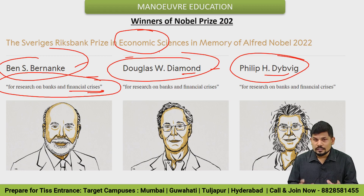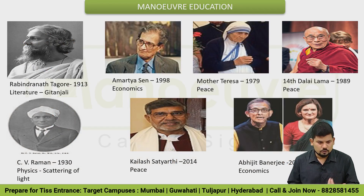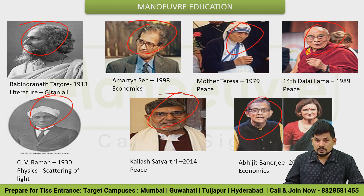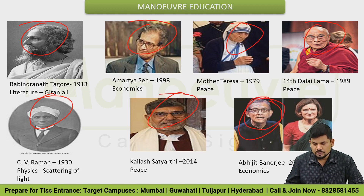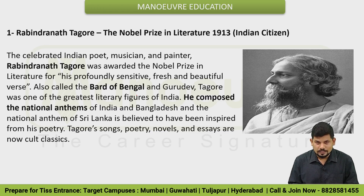Now see the well-known recipients from India in the past. The personalities are Rabindranath Tagore, Amartya Sen, Mother Teresa, Dalai Lama, Kailash Satyarthi, Subrahmanyan Chandrasekhar, and Abhijit Banerjee — the most recent last recipient. Abhijit Banerjee received it in 2019 in the economics field. Before that, in 2014, Kailash Satyarthi received the Nobel Peace Prize. From India's point of view, all this data is important — field, year, country — practice as many questions as you can.